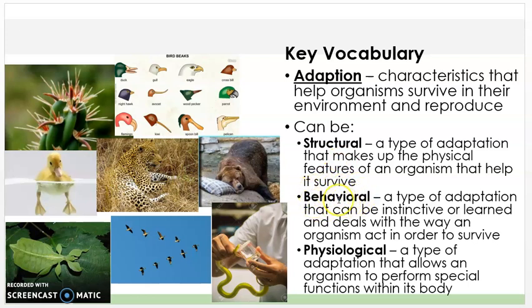Behavioral: a type of adaptation that can be instinctive or learned and deals with the way an organism acts in order to survive. And then physiological: a type of adaptation that allows an organism to perform special functions within its body.